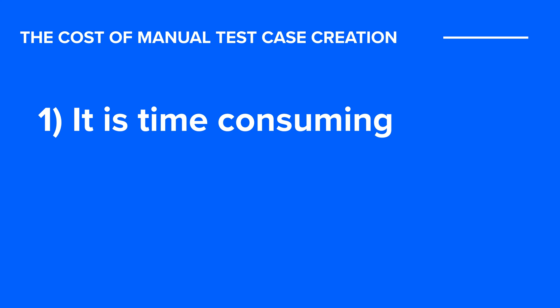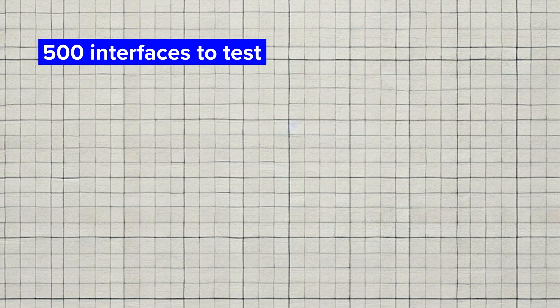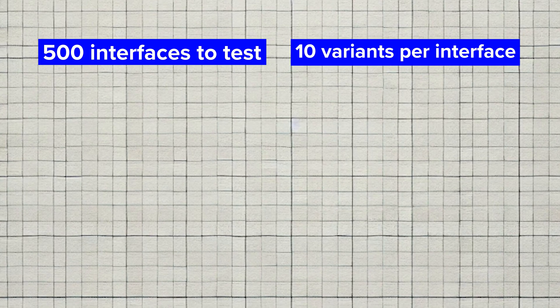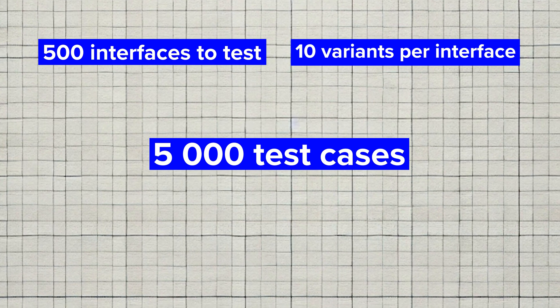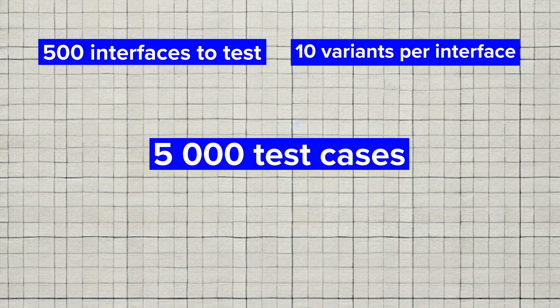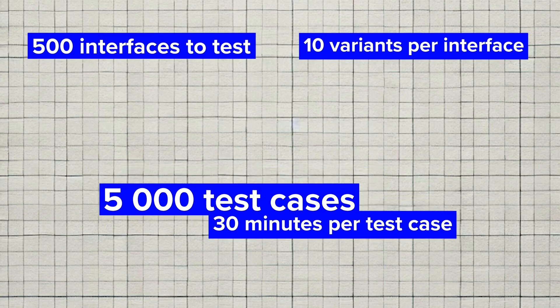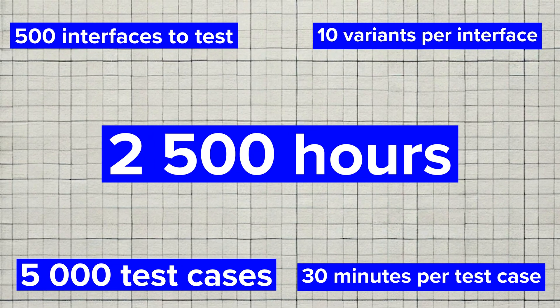First of all, it's an extremely time-consuming process. Let's say you have 500 interfaces to test, and you'd like to test each with 10 different variations of test cases — that would mean having to manually create 5,000 test cases. If we assume that one test case preparation takes 30 minutes, we end up with a whopping 2,500 hours of time needed just for test case preparation, and we haven't even talked about execution yet. Naturally, for many projects, that kind of testing resource will not be available.